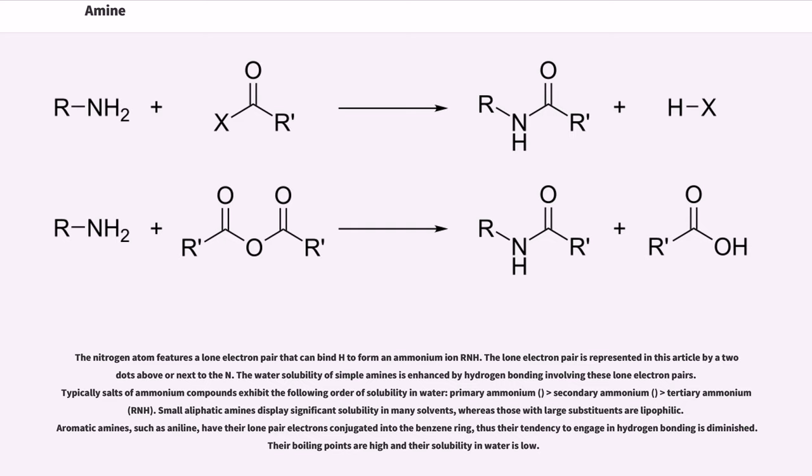Typically salts of ammonium compounds exhibit the following order of solubility in water: primary ammonium greater than secondary ammonium greater than tertiary ammonium RNH3+. Small aliphatic amines display significant solubility in many solvents, whereas those with large substituents are lipophilic. Aromatic amines, such as aniline, have their lone pair electrons conjugated into the benzene ring, thus their tendency to engage in hydrogen bonding is diminished. Their boiling points are high and their solubility in water is low.